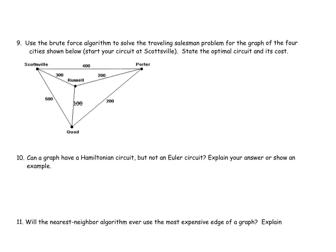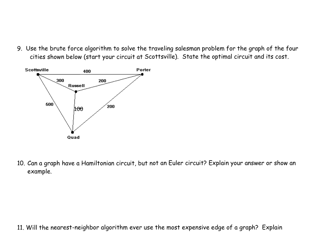We need to list all the possible circuits. I'm starting at Scottsville, so I'm going to abbreviate Scottsville as S. Porter is going to be P, Russell is going to be R, and Quad Cities is going to be Q. These are the abbreviations I'm going to use when putting this together, so there's no confusion.